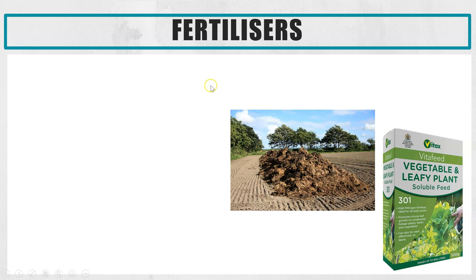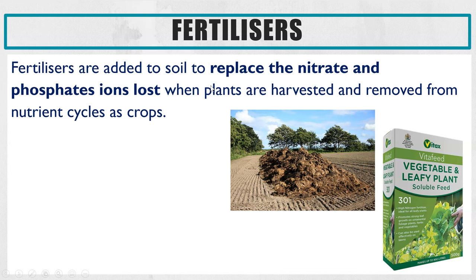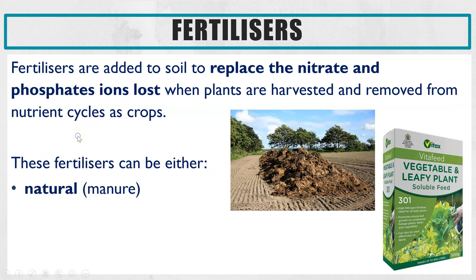First of all, fertilizers. This links to the nutrient cycle — the nitrogen cycle and the phosphorus cycle. Fertilizers are added to soil to replace the nitrates and phosphates which are lost when plants are harvested. When harvested, they're removed from the cycle and take those nutrients with them, which is why we have to add fertilizers to replace the nitrogen and phosphates lost.